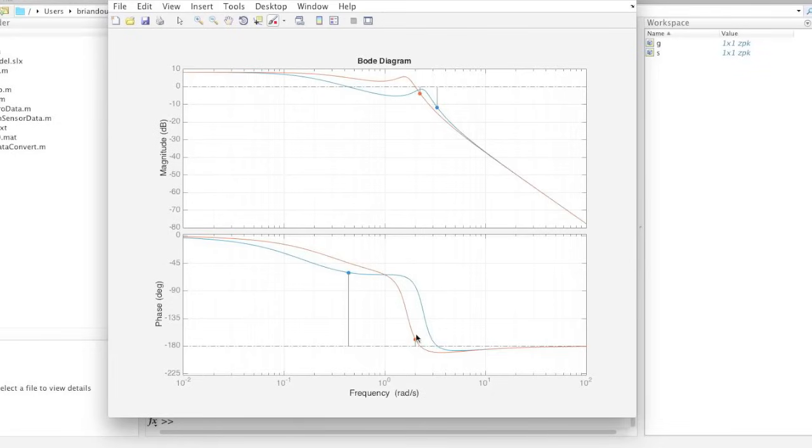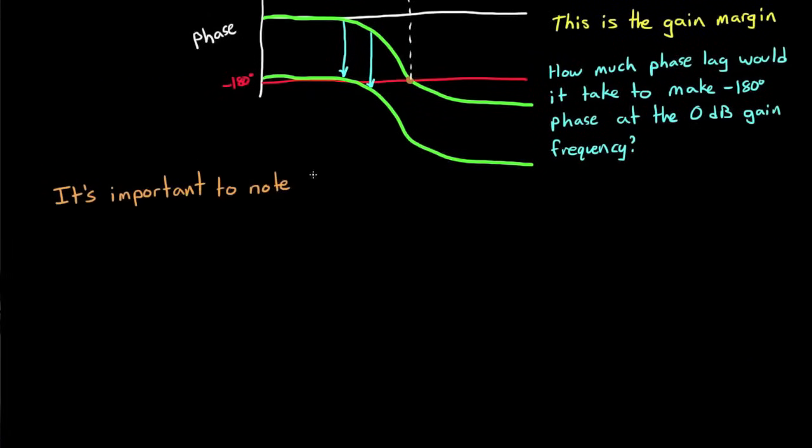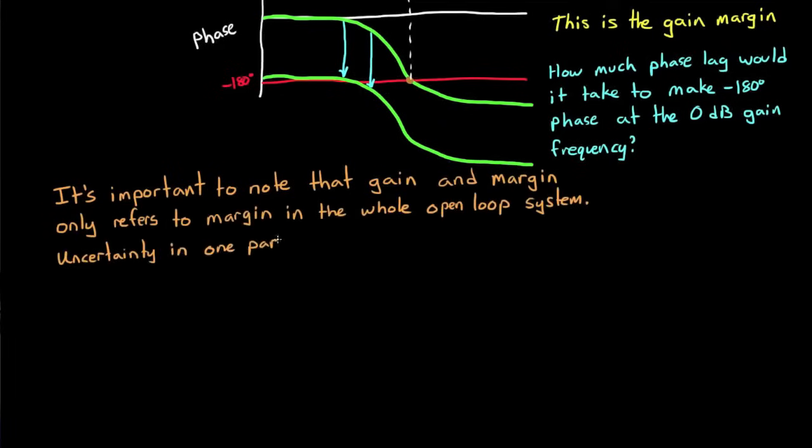In fact reducing it made our system have almost no margin at all. Which at first might seem a little incredible because why would reducing a number cause our system to almost go unstable? But the key is that it's important to note that gain and phase margin only refers to margin in the whole open loop system. And uncertainty in one particular parameter might affect you more than you think.